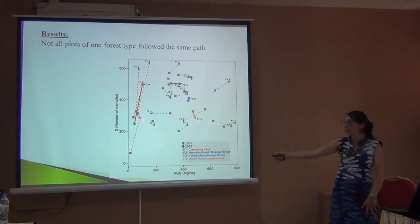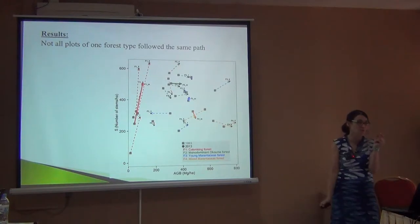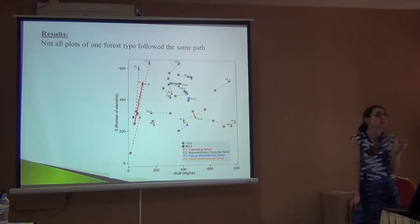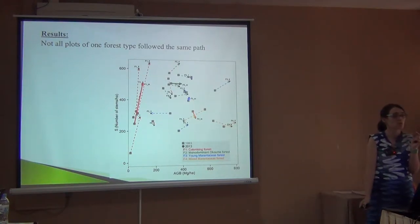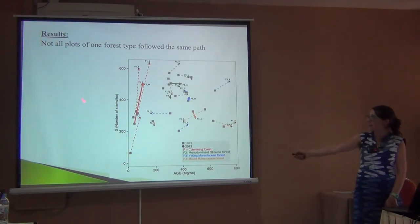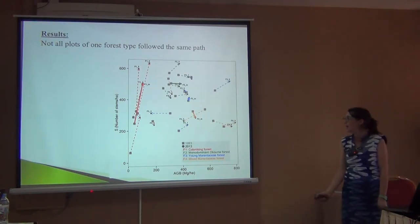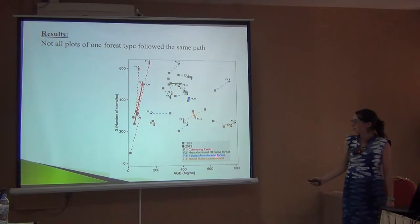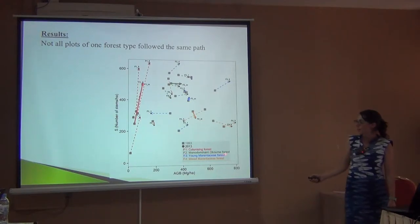Over time, it increased a lot — many trees happened to grow there — but the biomass was small, because many, many trees but small ones. For this type of colonizing forest, most of them did the same thing. And I think what's interesting is number two.